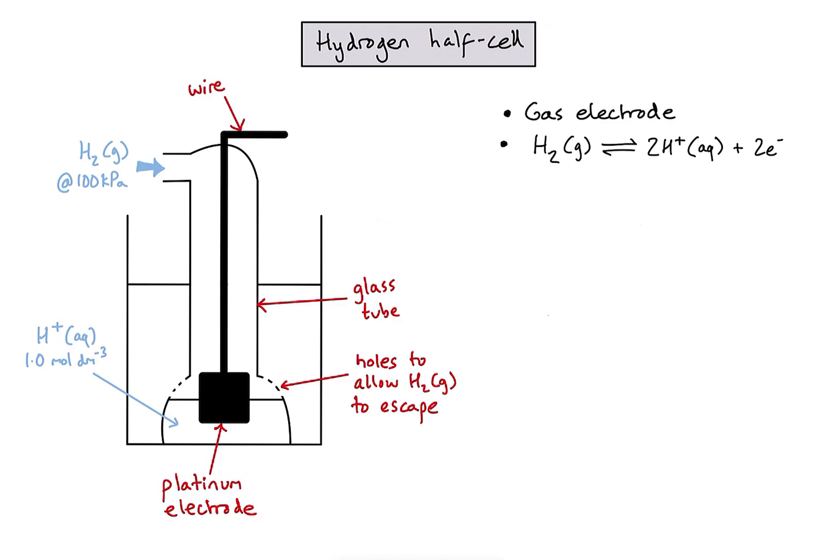Now, why have we used a platinum electrode there? Well, the first thing to note is that platinum is very unreactive, so it's not going to get involved in any redox processes itself. And what it's doing is effectively providing a surface for my redox process to happen on.